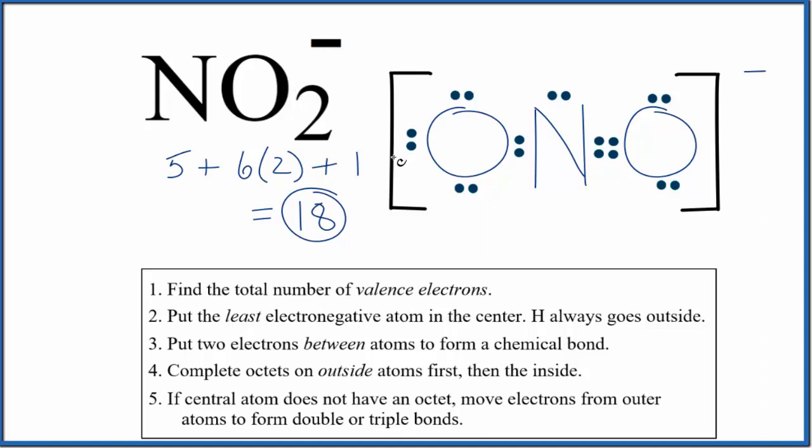Do note that we have resonance. We could have put the double bond over here instead. Either way is okay. But what happens in reality is this double bond, it's averaged across the ion. So we could draw it like this, showing the bond that double bonds averaged between the nitrogen and the two oxygens. And note, lone pairs aren't shown in this representation.